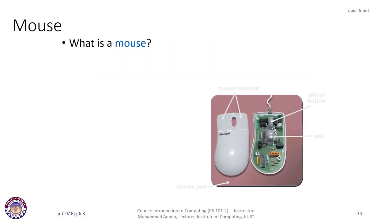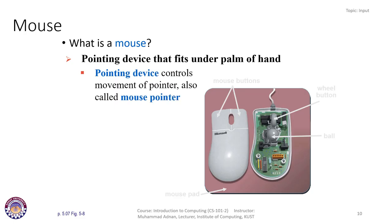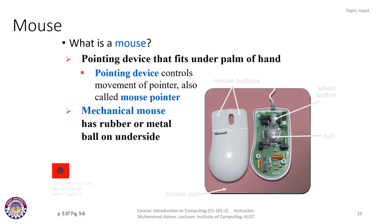We have a very special type of input device called a mouse. A lot of people use a mouse because they feel hesitant typing commands on the keyboard. The mouse is a pointing device that fits under the palm of your hand. We have a left mouse button, right mouse button, a wheel button, and a ball underneath that rotates to move the cursor on the screen.